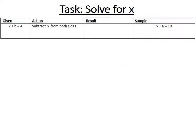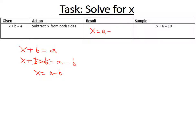Now a similar case: X plus b equals a. Again, do the opposite of what's being done to X. Since b is being added, remove b from both sides. X plus b minus b equals a minus b. Since b minus b is zero, X equals a minus b. Don't memorize this — try to derive it yourself so you understand the material rather than cramming things you won't really understand.